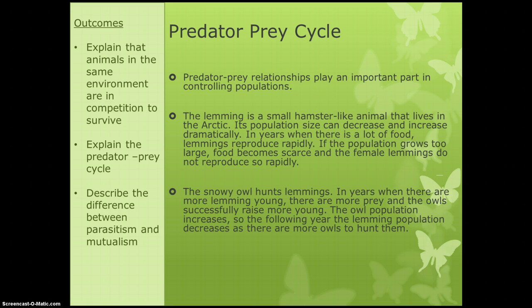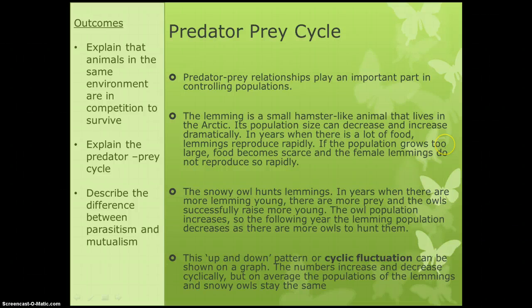Snowy owls hunt lemmings, and when there are lots of baby lemmings — lots of prey — the owls are able to successfully rear more of their own young, so the owl population goes up. But if the owl population goes up the next year, the lemming population goes down because they're being hunted by more owls. When the lemming population goes down there will be fewer owls, so the owl population goes down too. We call this cyclic fluctuations — it goes up and down in a cycle and can be shown on a graph quite nicely.